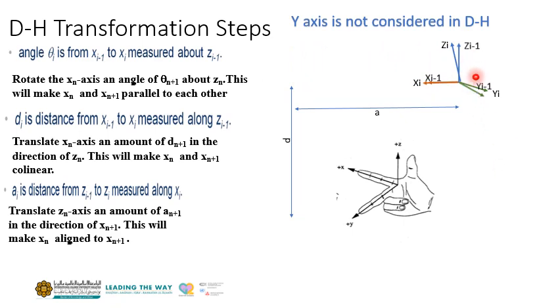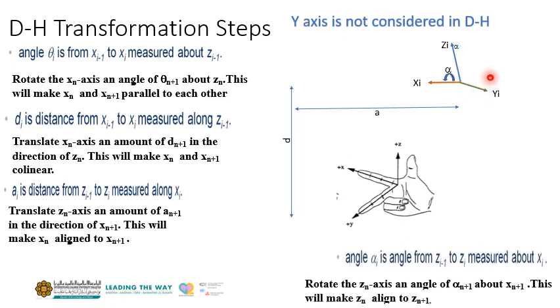So now, you can see they are almost aligned with each other, the two frames of reference, except the twist angle. So you can see there is a twist here. And if you do this rotation of alpha, then it will be aligned with z and y. This z and y will also be aligned. So this is how you can get all the transformation sequentially.